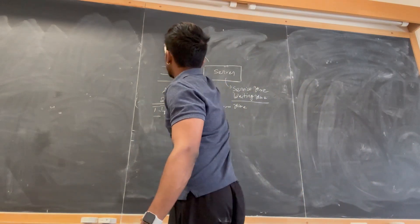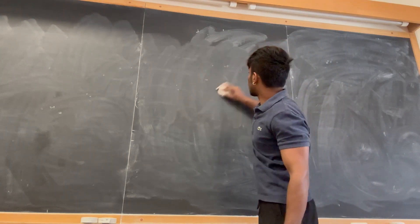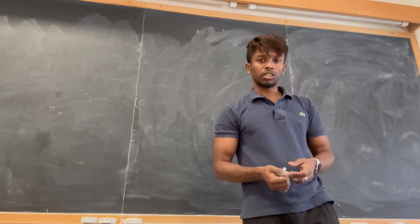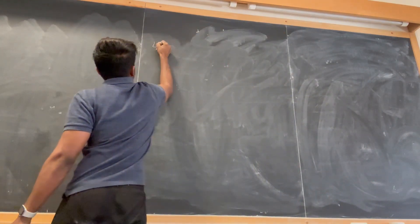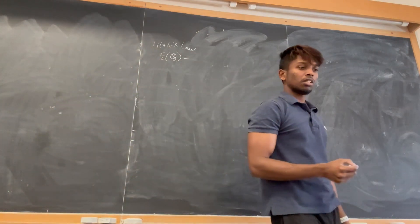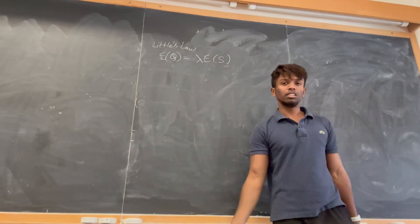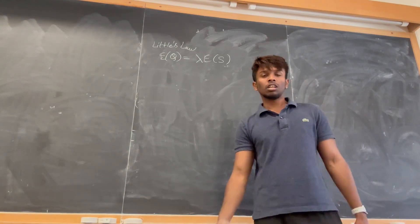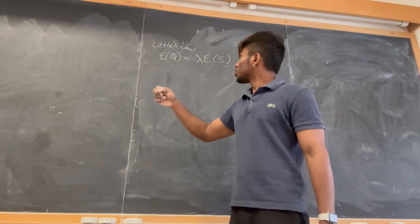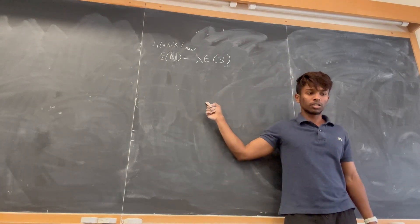We consider a system in statistical equilibrium where the number of customers coming in equals the number going out. We use Little's Law, which gives the average number of customers in the system. By Little's Law, E[N] = lambda × E[S], where E[S] is the total system time and lambda is the Poisson arrival rate.